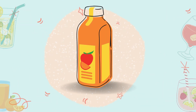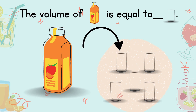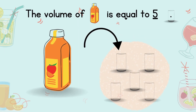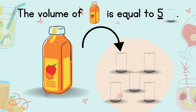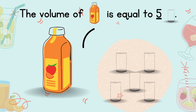Next, we have a bottle of juice and we have a glass. Can you tell how many glasses is equal to the volume of a bottle of juice? Let's check. The volume of a bottle of juice is equal to 5 glasses. Good job!